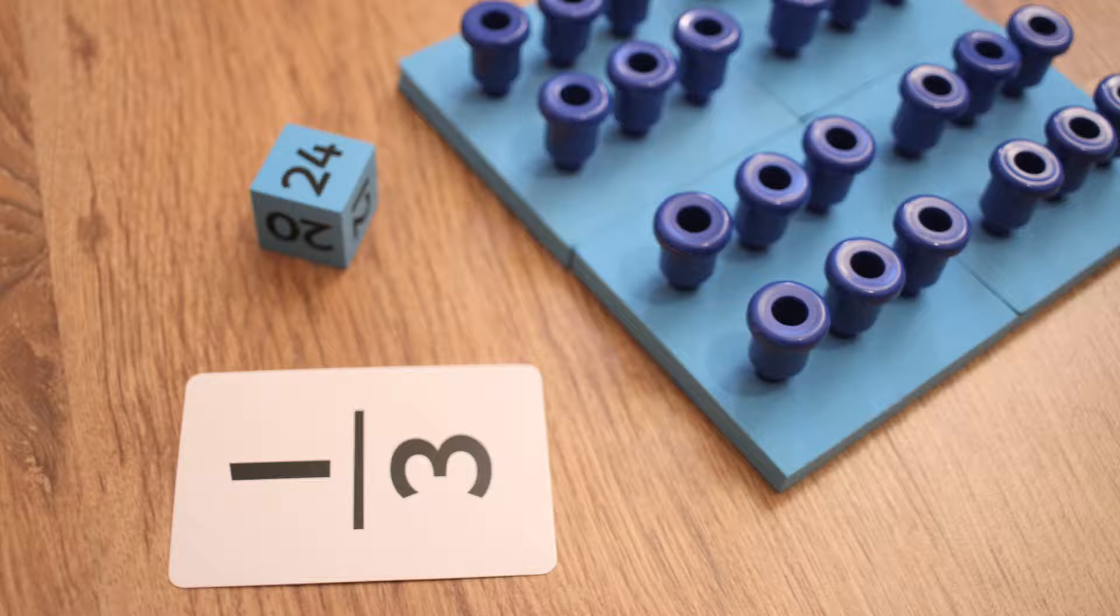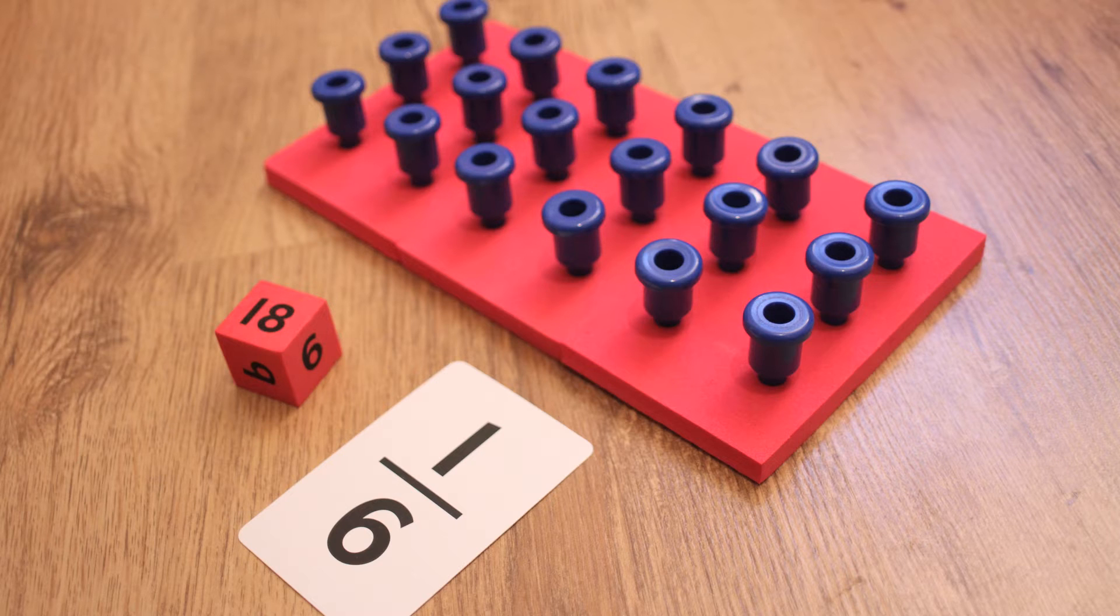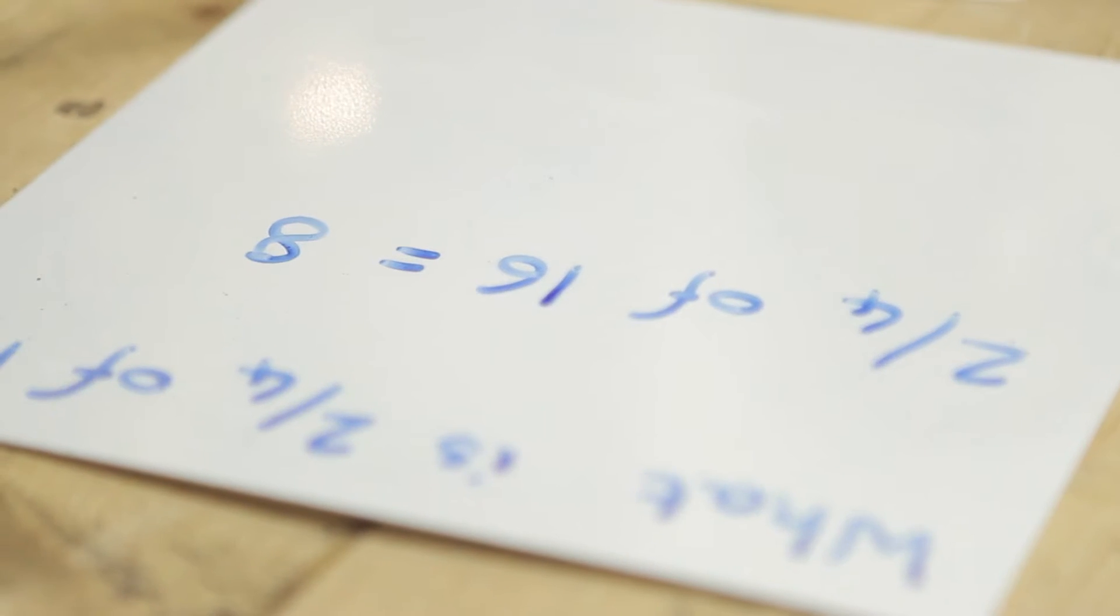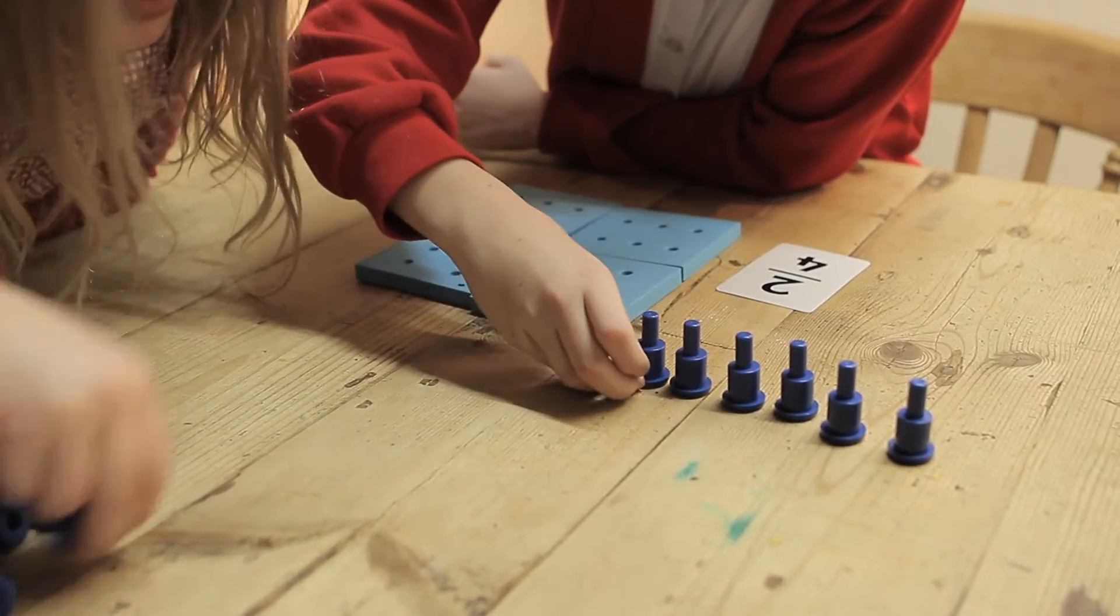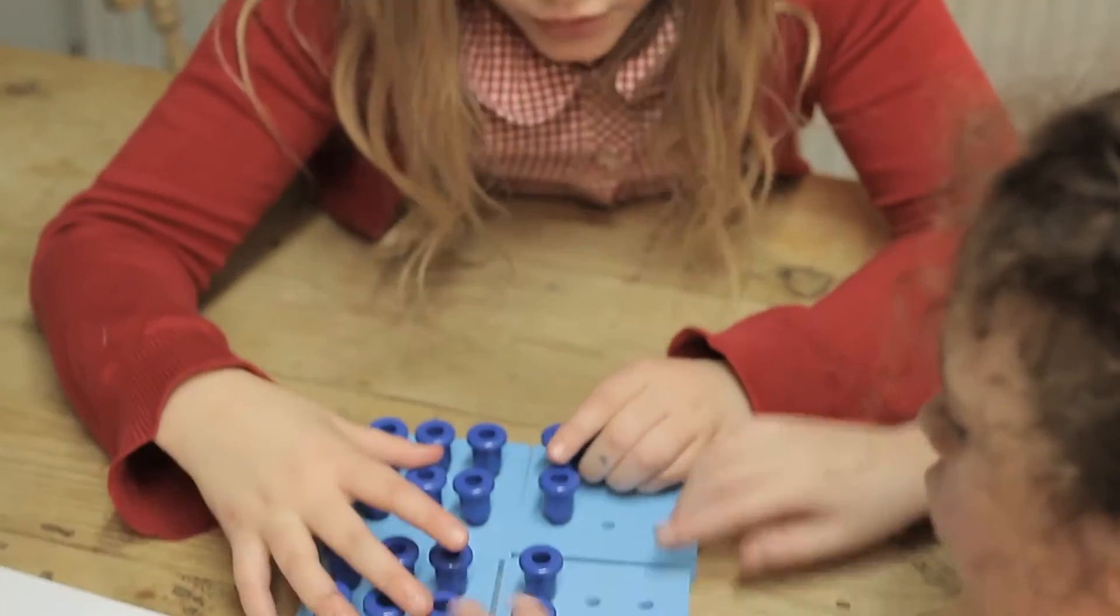Finding half of 12, a third of 24, or a sixth of 18 are the sorts of questions that children find difficult to answer, especially if they are new to the concept of fractions.